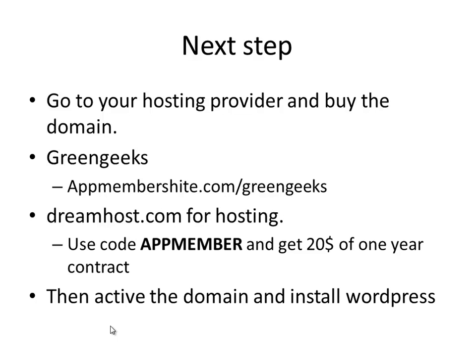One big difference: on DreamHost you can buy domain names directly online, whereas with GreenGeeks you have to email support to request a domain and they'll charge your credit card — not a big problem. If you go to DreamHost and use the coupon code 'appmember,' you'll get $20 off the first year or $40 off a two-year contract. When you sign up, they include a domain name, which you can activate in 15–30 minutes and then start populating with content and installing WordPress.